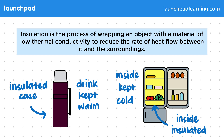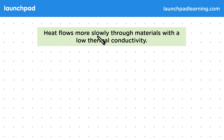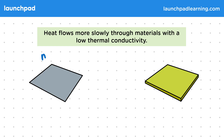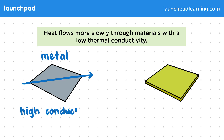So what kinds of materials should be used for insulators? Heat flows more slowly through materials with a low thermal conductivity. Remember that thermal conductivity is a measure of how quickly heat flows through a material. For your exam, you're not expected to recall the formal definition of thermal conductivity. The atoms in metal, for example, are closely packed together in a rigid structure, which means they are good conductors of heat.